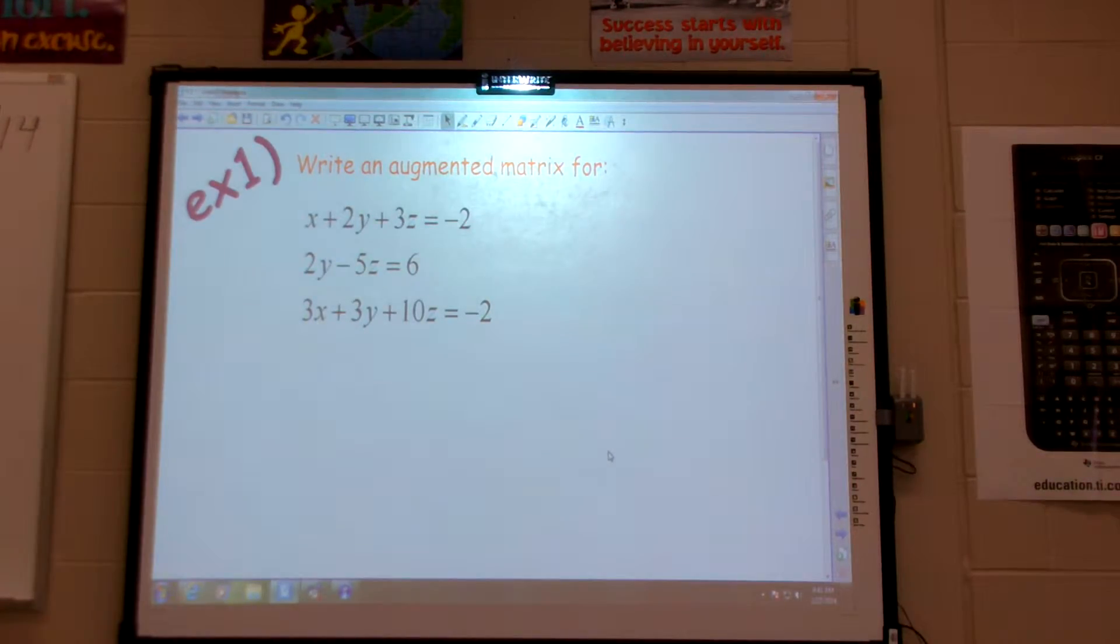So I have x plus 2y plus 3z equals negative 2, 2y minus 5z equals 6, 3x plus 3y plus 10z equals negative 2.